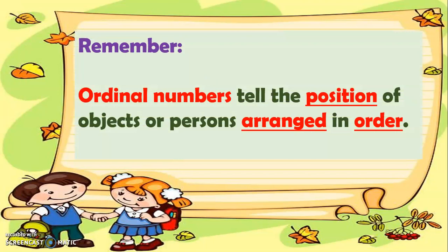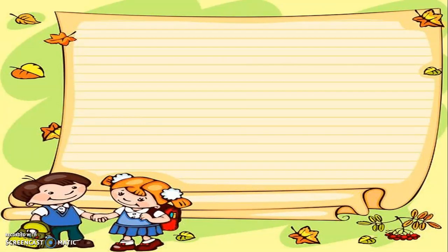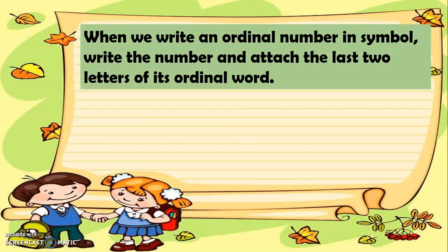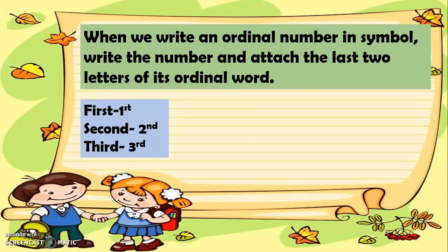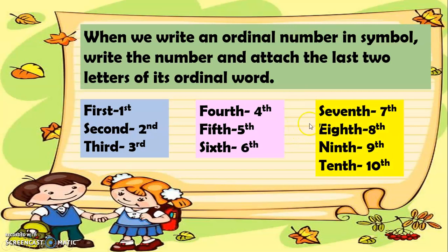Remember: ordinal numbers tell the position of objects or persons arranged in order. We write ordinal numbers like this — we add 'st' for first place, 'nd' for second place, 'rd' for third place, and 'th' at the end of the other ordinal numbers, such as fourth, fifth, sixth, and seventh. When we write an ordinal number in symbol, we write the number and attach the last two letters of its ordinal word: 1st, 2nd, 3rd, 4th, 5th, 6th, 7th, 8th, 9th, and 10th.